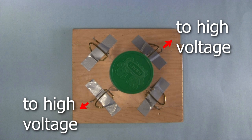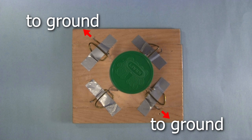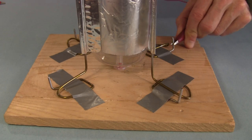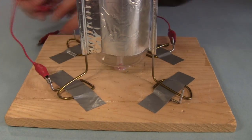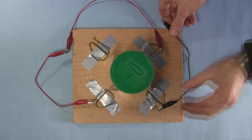They'll be wired so that half are connected to high voltage and half are connected to ground. I'll connect red wires for the high voltage ones and black for the ground ones.